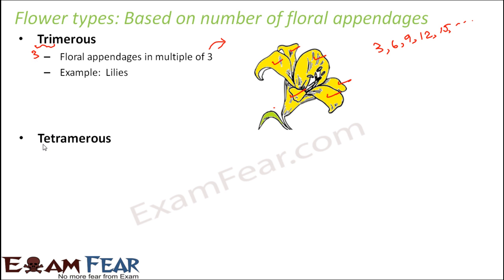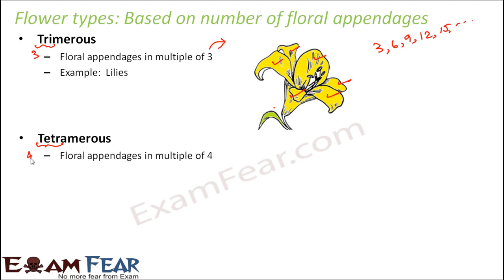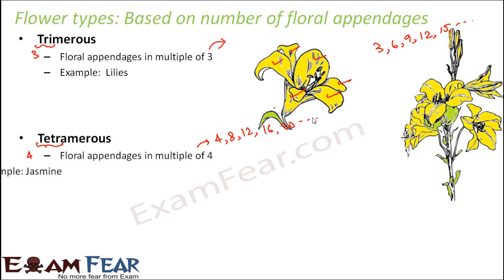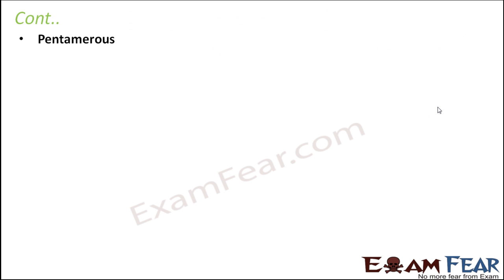Tetramerous flowers have appendages in multiples of four — 'tetra' means four. Multiples of four include four, eight, twelve, sixteen, and twenty. For example, a jasmine flower has four petals, making it tetramerous.